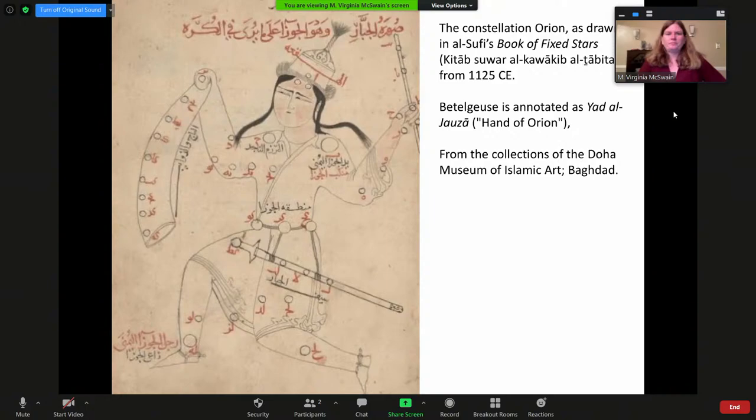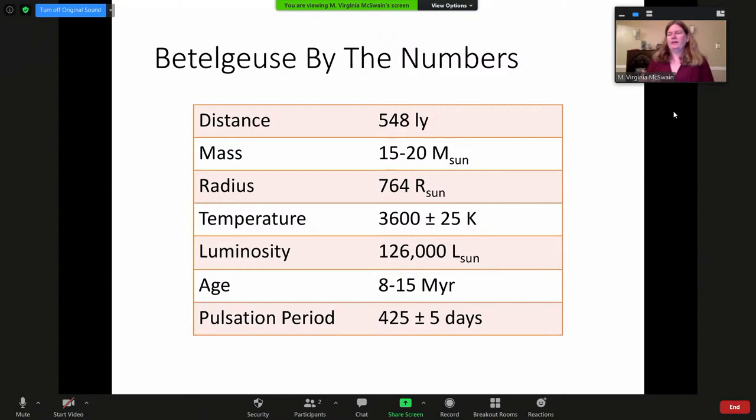By the numbers, we're talking about a red supergiant here. Betelgeuse is about 550 light-years from the Earth, give or take. It probably has a mass of about 15 to 20 times the mass of our Sun, which would mean that it was born as a hot B-type star, which is considered a massive star, and that's enough to eventually supernova at the end of its life.